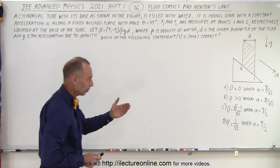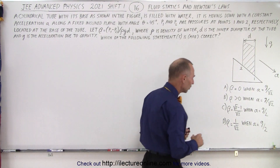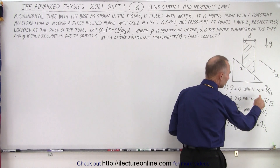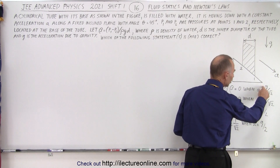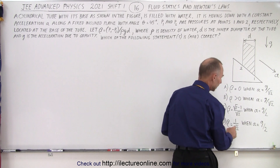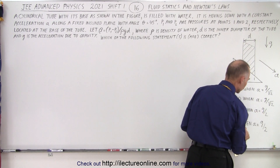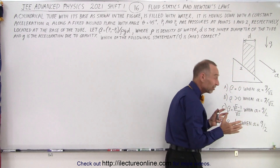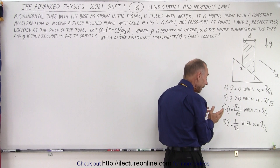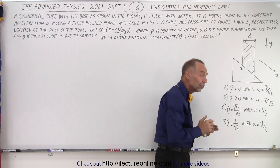Which of the following statements are correct? Notice there are four possibilities, but a and b are related to a being g divided by the square root of 2, and c and d are related to a being g over 2. So possibly it's either a or b, and/or c or d.